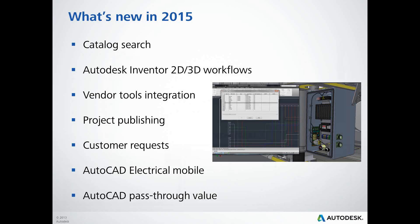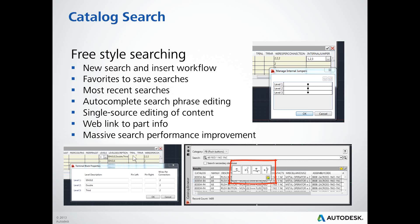The first thing I want to talk about is our catalog search feature. As users of AutoCAD Electrical, you're probably aware that we have many different databases and tables. What we've done with the new catalog search feature is combine all of those databases into a single interface. The databases are still there, but now you can access them through a single interface. In the lower left-hand corner, you'll see the pin list information — all inside the same dialog box.